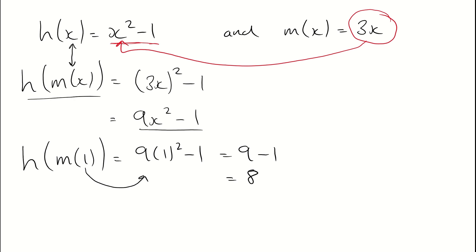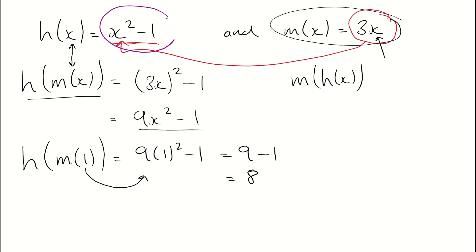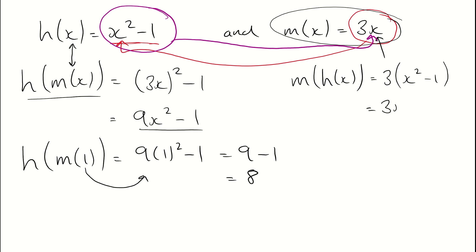But it's really important to remember that h of m of x is most definitely not the same as m of h of x. If I take my m of x function, which is 3x, and everywhere I see an x I now need to put in what h of x is — x squared minus 1. So x squared minus 1 goes in for x, giving me 3 lots of x squared minus 1. Expanding those brackets out, I get 3x squared minus 3. That is definitely not the same as 9x squared minus 1.